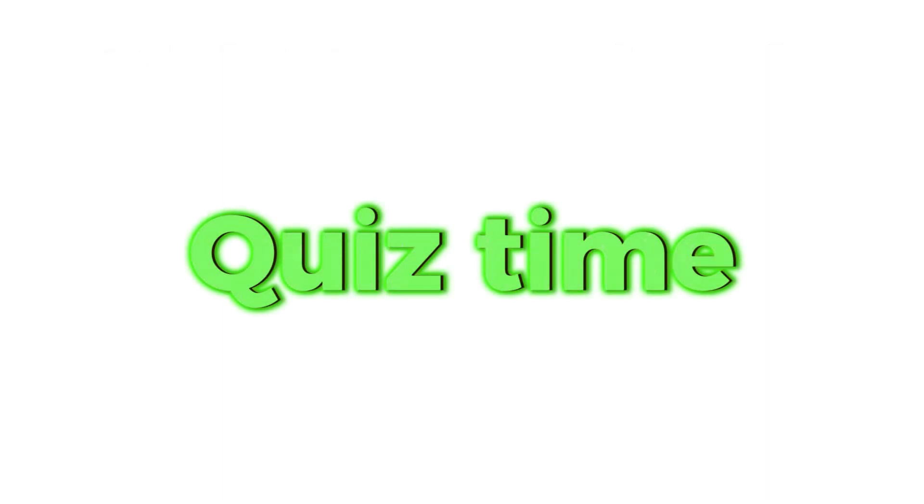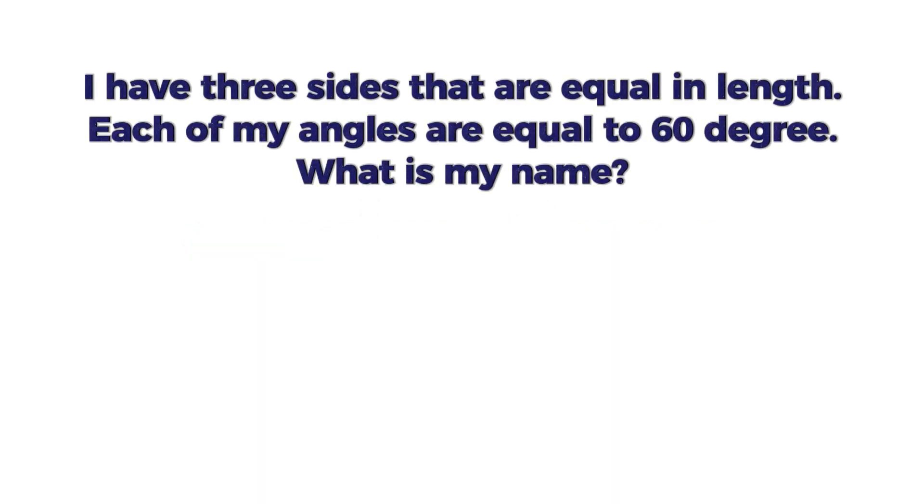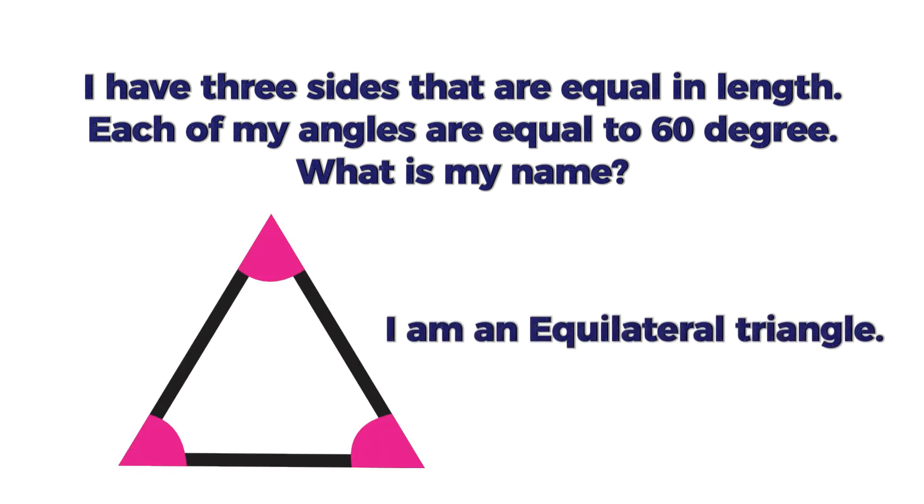Quiz time, let's practice. I have three sides that are equal in length. Each of my angles are equal to 60 degrees. What is my name? I am an equilateral triangle.